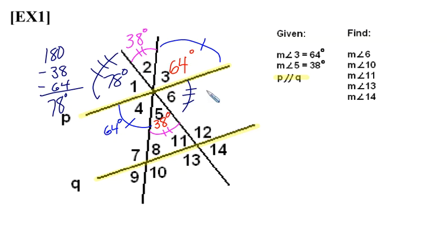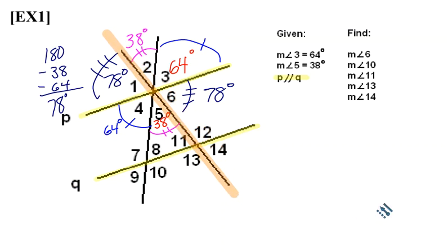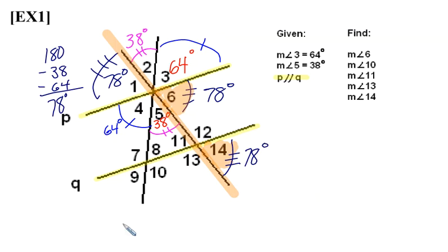Angles 1 and 6 are vertical, so angle 6 will be 78 degrees as well. Now, on a problem like this, if it were to appear on an assignment, quiz, or test, work would not need to be as extensive — what we're demonstrating on the screen would suffice. The next question is how we figure out the angles down around line Q. If we look at the line highlighted in orange as a transversal, angle 6 and angle 14 must be congruent because those are corresponding angles formed by parallel lines. So angle 14 is also 78 degrees.